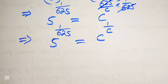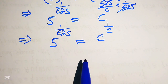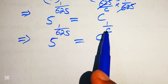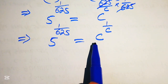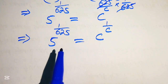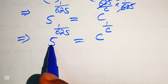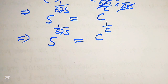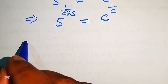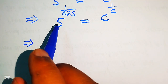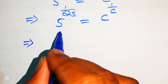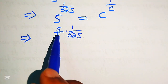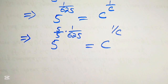On the right hand side the base is c and its exponent is 1 over c — they are reciprocals of each other. Similarly, if our base is 5 then its exponent should be 1 over 5, and if the exponent is 1 over 625 then the base should be 625. To achieve this, we multiply and divide the exponent on the left hand side by 5.